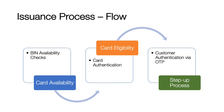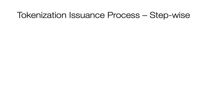Card eligibility is where the TSP works along with the issuer to authenticate the card and verify it is a valid one before proceeding with tokenization. Finally, the step-up process is where we authenticate that the customer is valid via an OTP or via a call.